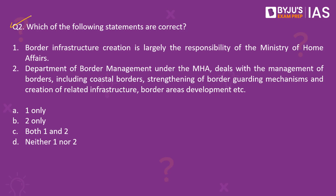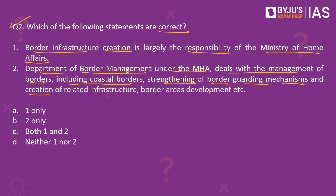Now let's look at the second question. Which of the following statements are correct? First, border infrastructure creation is largely the responsibility of the Ministry of Home Affairs. Second, the Department of Border Management under the MHA deals with the management of borders, including coastal borders, strengthening of border guarding mechanisms, creation of related infrastructure, and border areas development. Both the given statements are correct, so option C is the right answer.